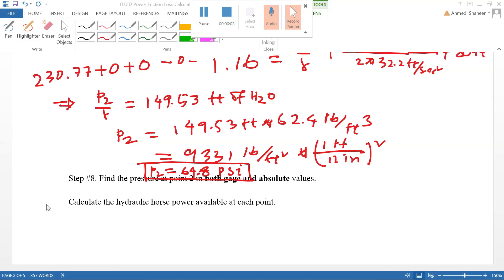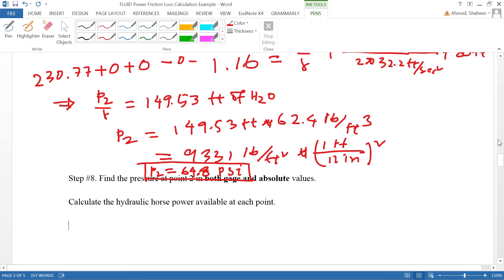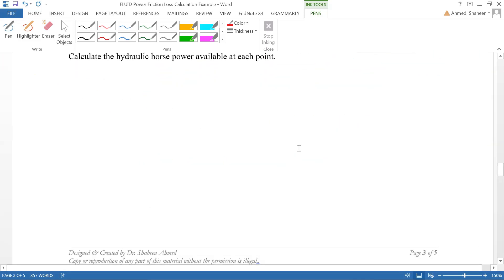So the power available at point 2, if you look at this psi drop from 100 psi. At point 1 we had the pump developing about 100 psi, and then at point 1 we have pressure 100 psi.